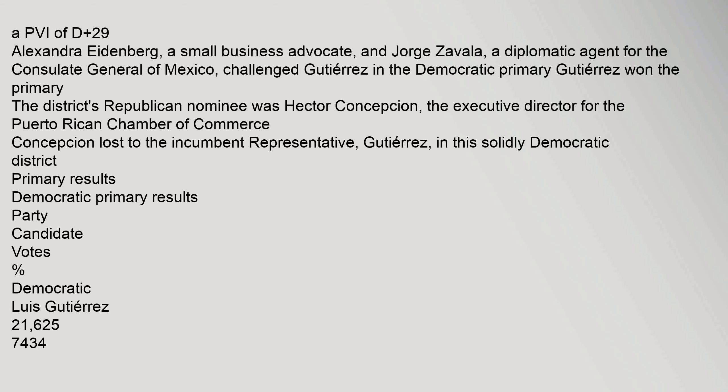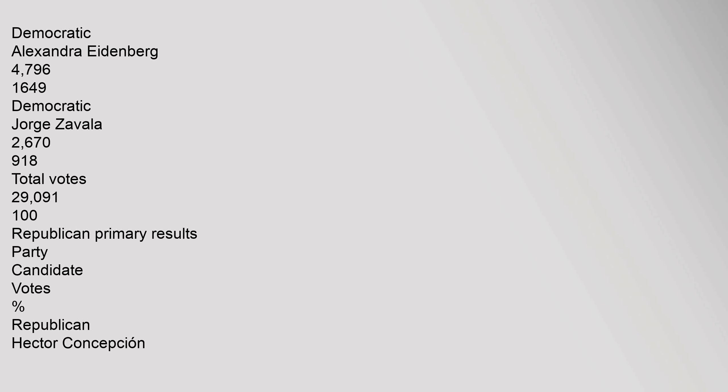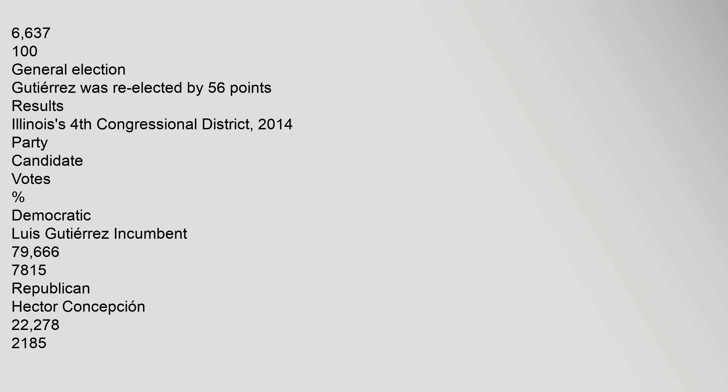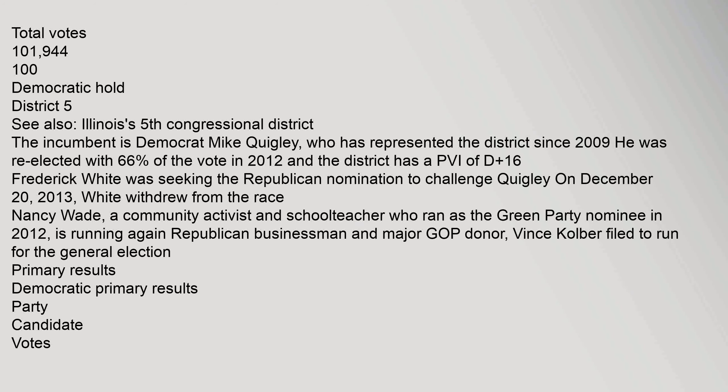Concepcion lost to the incumbent representative Gutierrez in this solidly Democratic district. Democratic primary results: Luis Gutierrez 21,625; Alexandra Eidenberg 4,796; Jorge Zavala 2,670; Total votes 29,091. Republican primary: Hector Concepcion 6,637 votes, 100%. General election: Gutierrez was re-elected by 56 points. Results: Luis Gutierrez (D) 79,666; Hector Concepcion (R) 22,278; Total votes 101,944. Democratic hold.